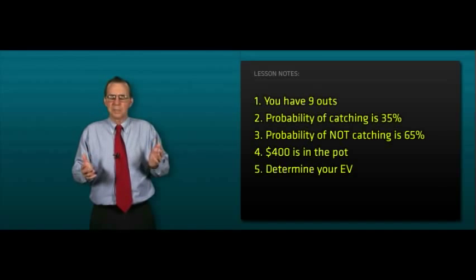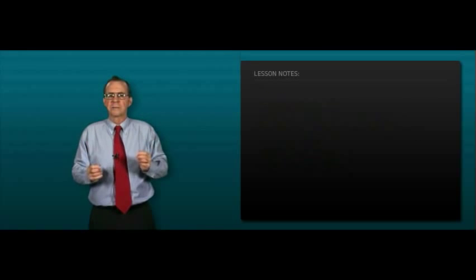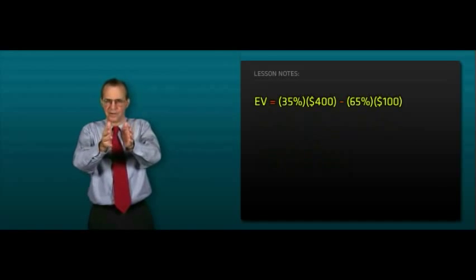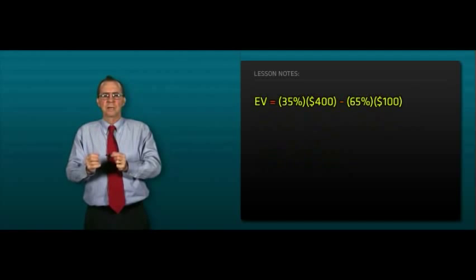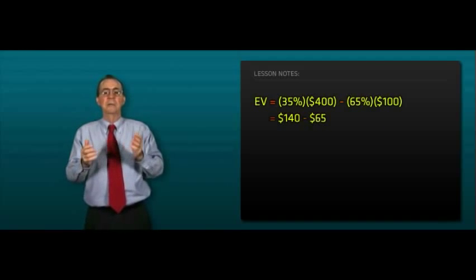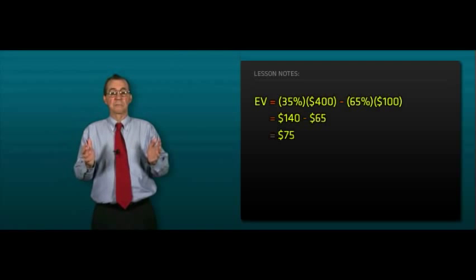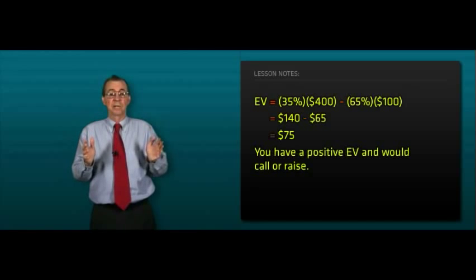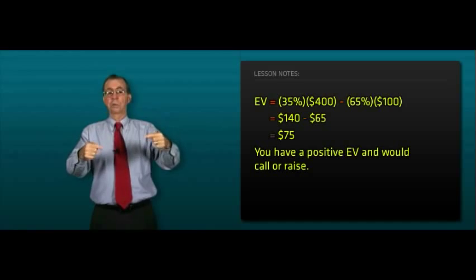You've got to be able to do this mental math. It's not tough, but you've got to practice it. Expected value equals 35% times the $400 minus 65% times the $100. 140 minus 65, $75 positive. We've got a positive expected value, and we would either call or raise.